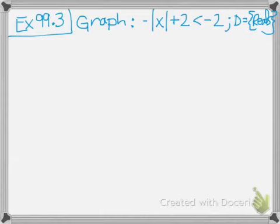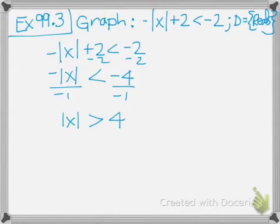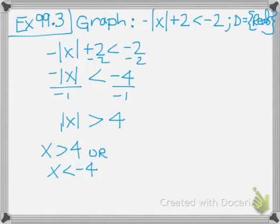Graph negative absolute value of x plus 2 is less than negative 2, domain is the real numbers. First, subtract 2 from both sides to get negative absolute value of x is less than negative 4. Divide by negative 1 and flip the sign: the absolute value of x is greater than 4. This means x is greater than 4 or x is less than negative 4.